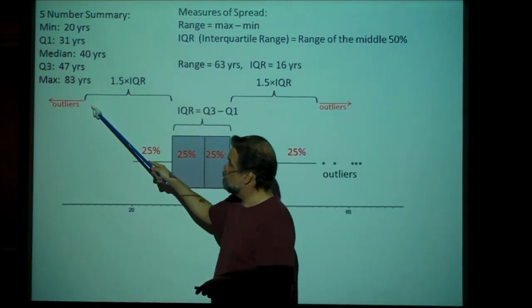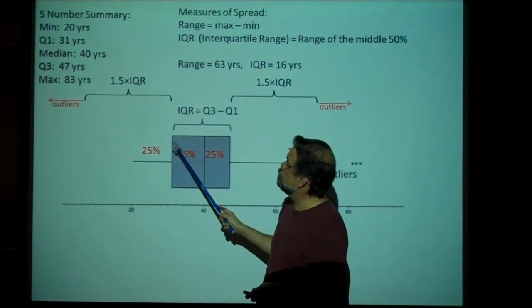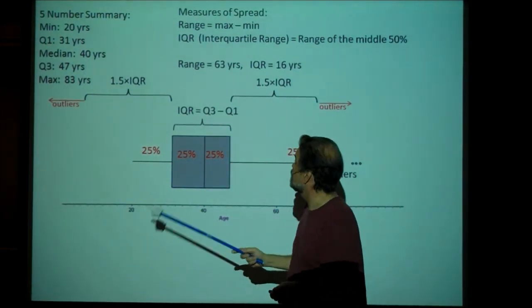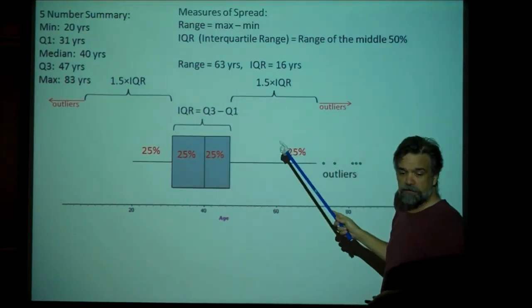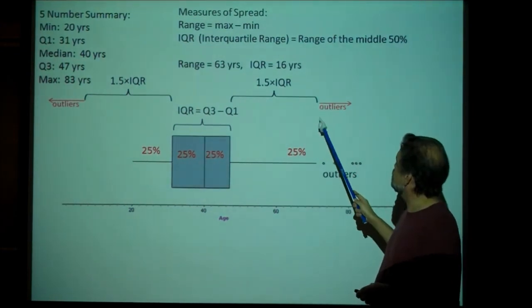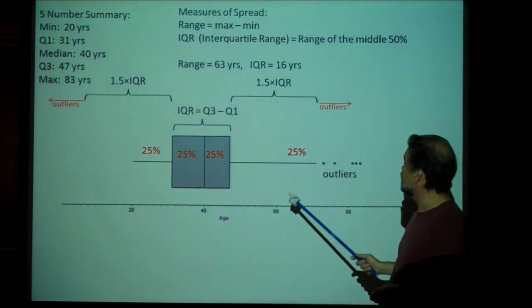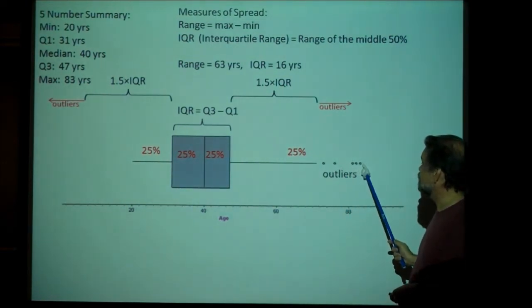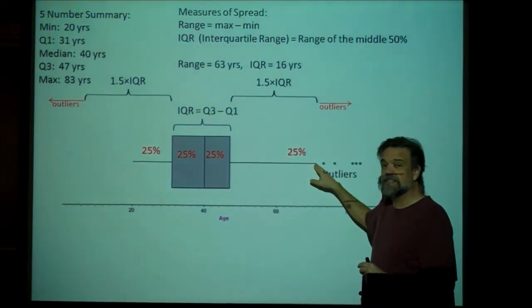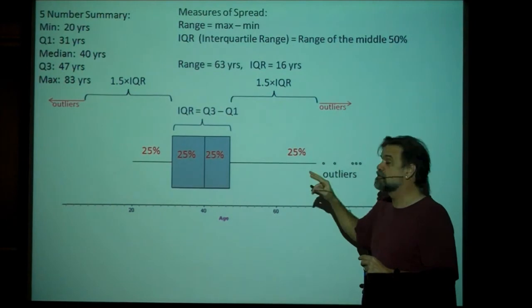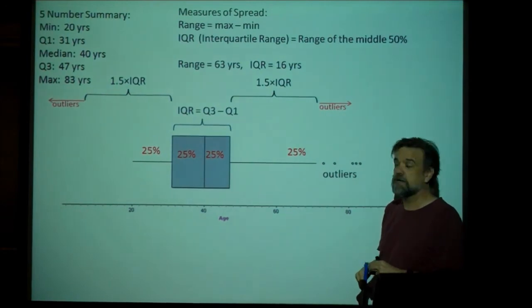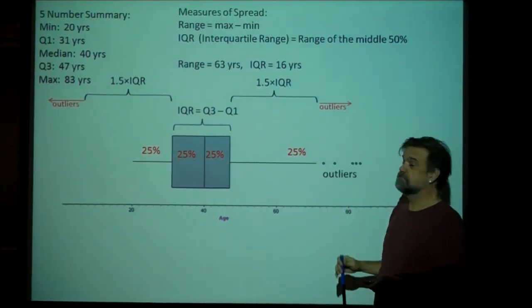So anything that would be lower than, well, let's see, 31 minus 24 would be 7. So anything lower than 7 would be an outlier. We have no outliers on the left side. And anything above, let's see, this is going to be 47 plus 24 gives us 71. So anything above 71 would be an outlier. And as you see, we have five outliers there. So the way that we draw this, this whisker is going to go out to the highest data point that is not considered an outlier. And then you stop, and then you put little dots to signify all the outliers. And there's your box plot.